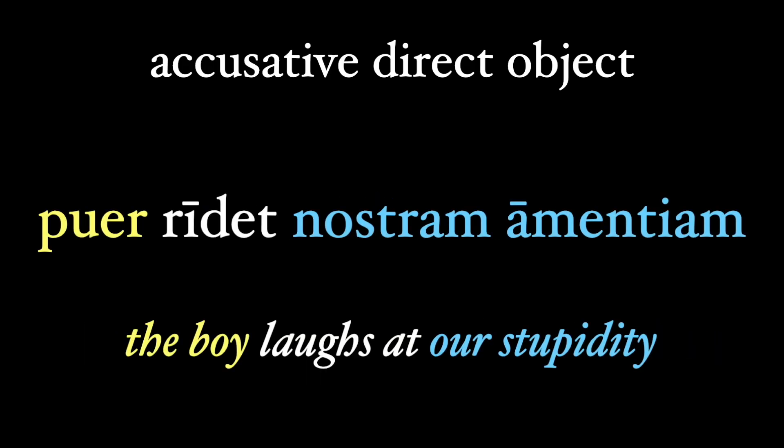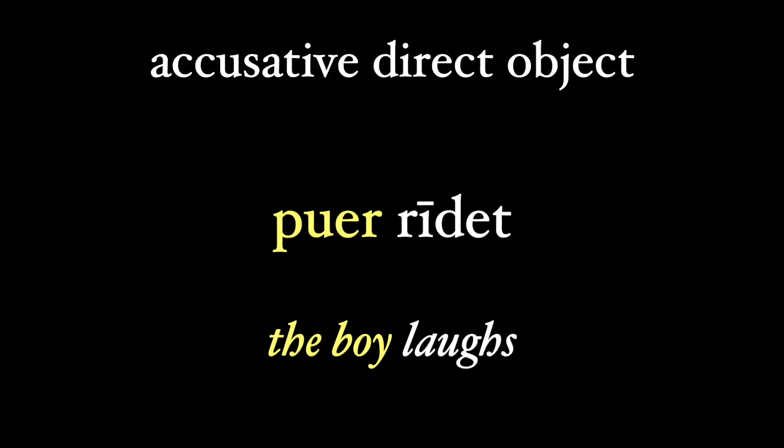'Puer ridet nostrum amentiam' — 'the boy laughs at our stupidity.' In this case, we use the word 'at' to help us translate the transitive 'ridet.' This verb, by the way, can also be used intransitively in Latin, so we can just say 'puer ridet' — 'the boy is laughing' — and stop right there.